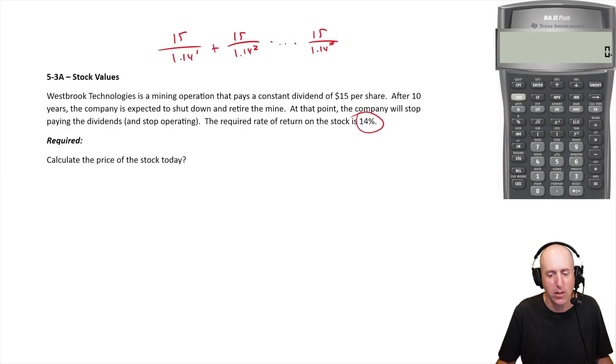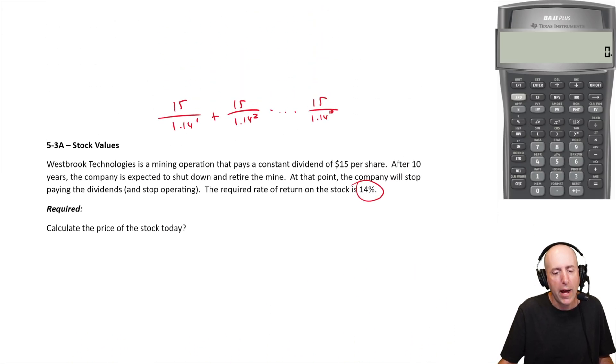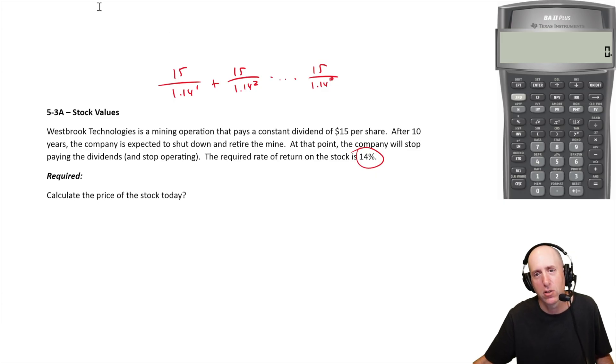We're going to get ten $15 dividends. What's that worth in today's dollars? Well this is an annuity situation, so we'll use the present value of an annuity formula. I'll do it in my calculator just because it is fairly quick and straightforward.